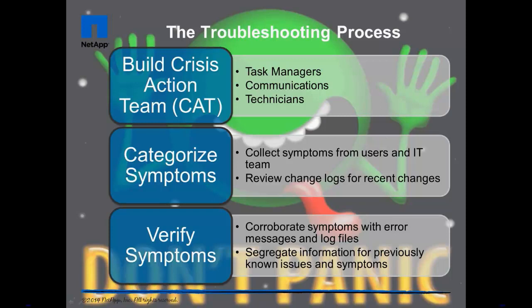The Troubleshooting Process. Build a Crisis Action Team. If the issues you are facing significantly affect the company, you need to tackle it as a team. The quickest way to make a problem worse is for everyone to run around in circles with their hair on fire.